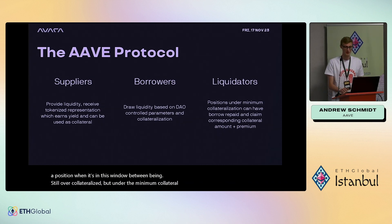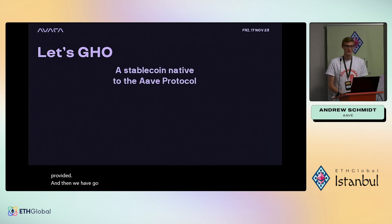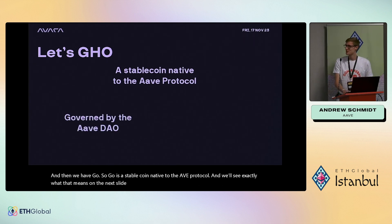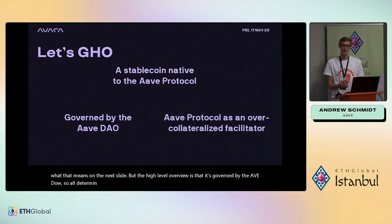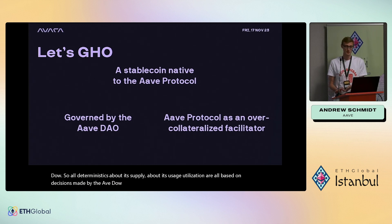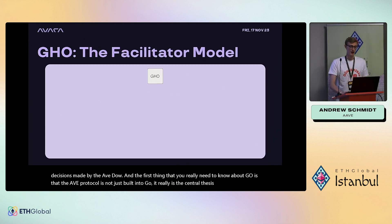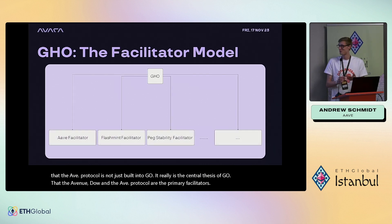GHO is a stablecoin native to the Aave protocol. It's governed by the Aave DAO — all deterministics about its supply and utilization are based on decisions made by the Aave DAO. The central thesis of GHO is that the Aave DAO and the Aave protocol are the primary facilitator of GHO.